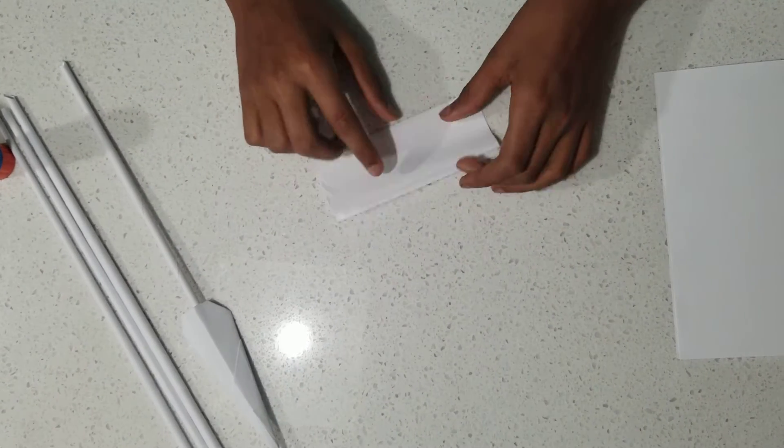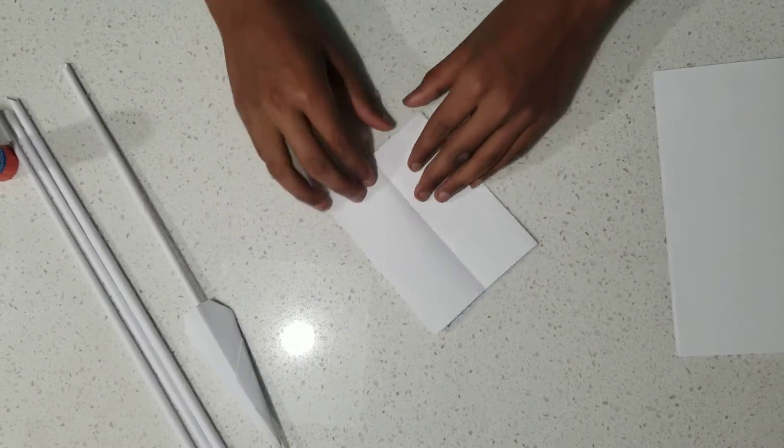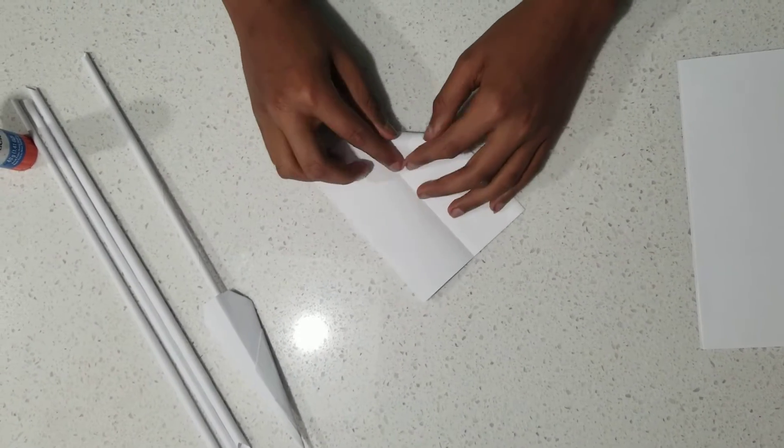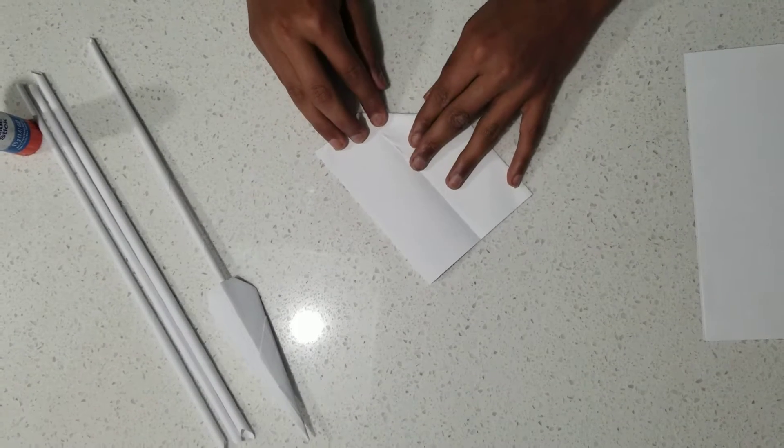Creasing is very important in origami, if you haven't heard. You fold this corner to the margin you have made here. Like that.